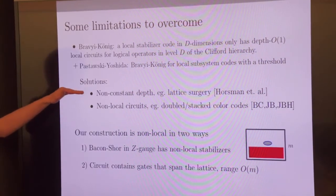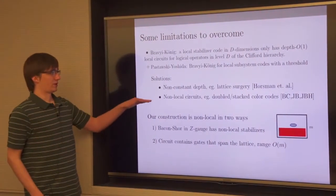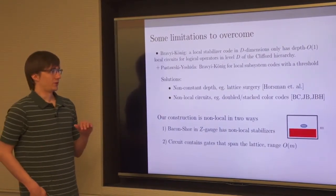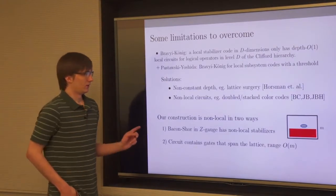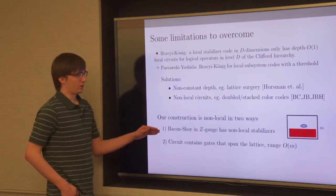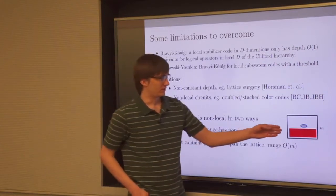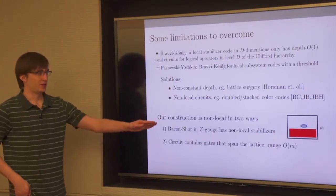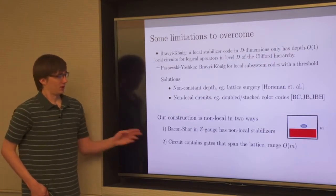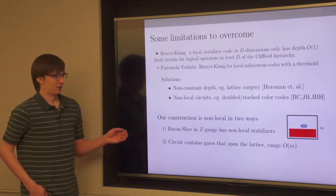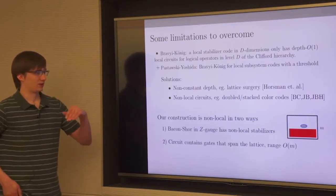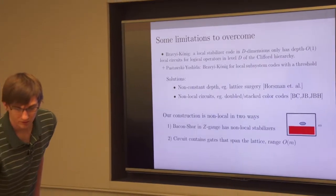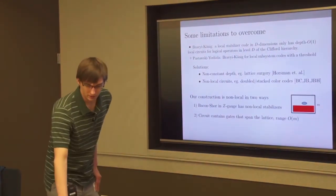Hastings and Yoshida say something similar for subsystem codes with a threshold. But you can get around this by using circuits that are not constant depth — like lattice surgery and braiding. You can also use circuits and codes that are not local, where stabilizers and circuits can couple qubits at long range. In the Bacon-Shor case in the Z gauge, there are very big X stabilizers that span the entire code, so these are not local codes. And the circuit for CCZ contains gates that span the lattice.